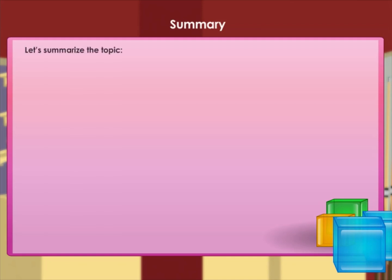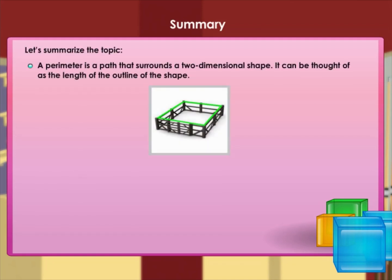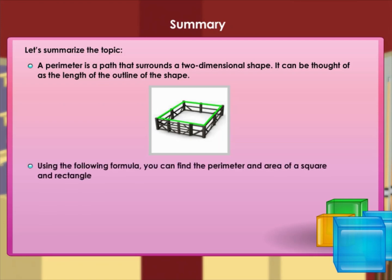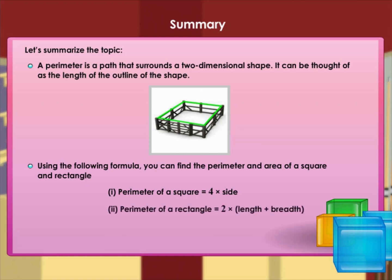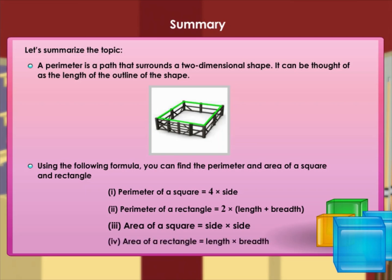Summary: a perimeter surrounds a two-dimensional shape and can be thought of as the length of the outline of the shape. Using the following formulas: perimeter of a square equals 4 times side; perimeter of a rectangle equals 2 times (length plus breadth); area of a square equals side times side; area of a rectangle equals length times breadth.